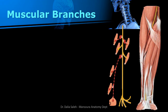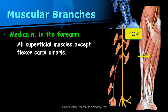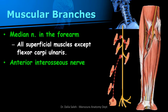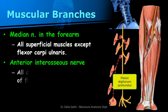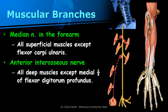In the forearm, the median nerve gives muscular branches to all superficial muscles of the front of the forearm except the flexor carpi ulnaris. So it supplies the pronator teres, the flexor carpi radialis, the palmaris longus, and the flexor digitorum superficialis. Then it gives the anterior interosseous nerve, which supplies the deep muscles of the front of the forearm except the medial half of the flexor digitorum profundus.